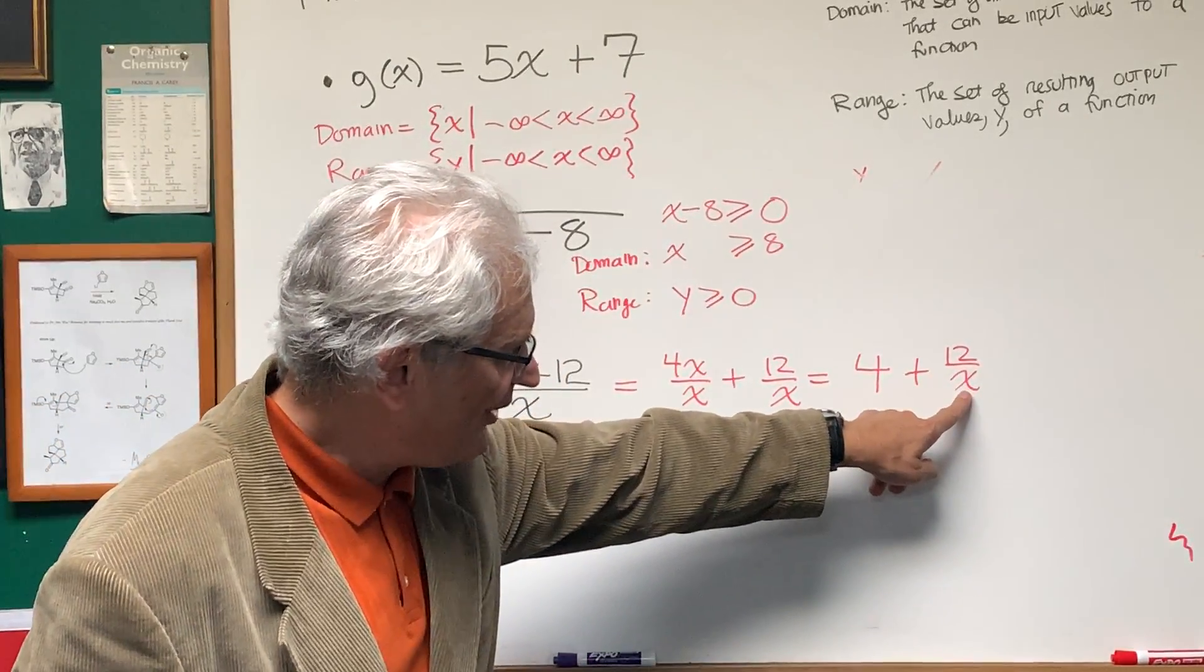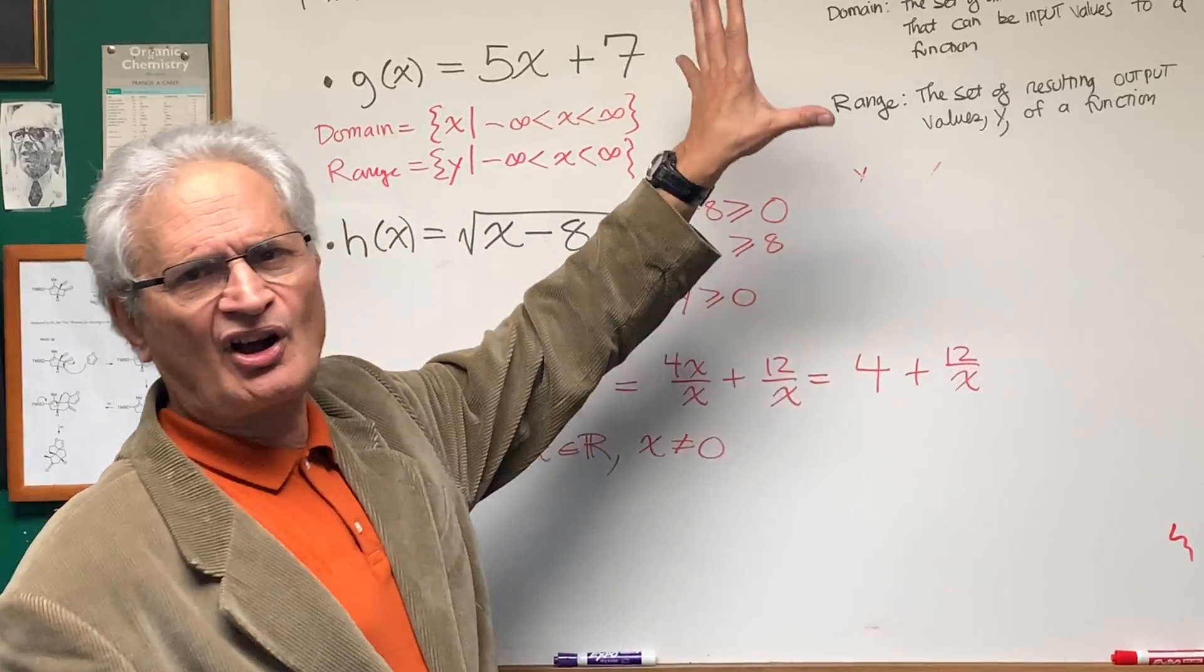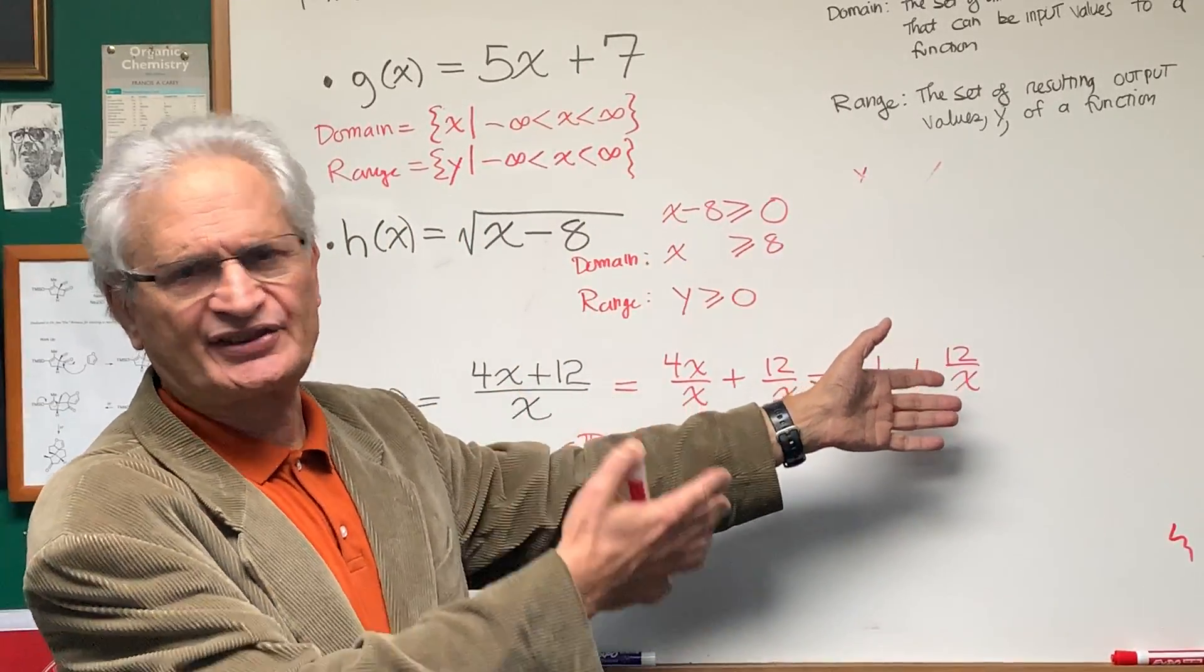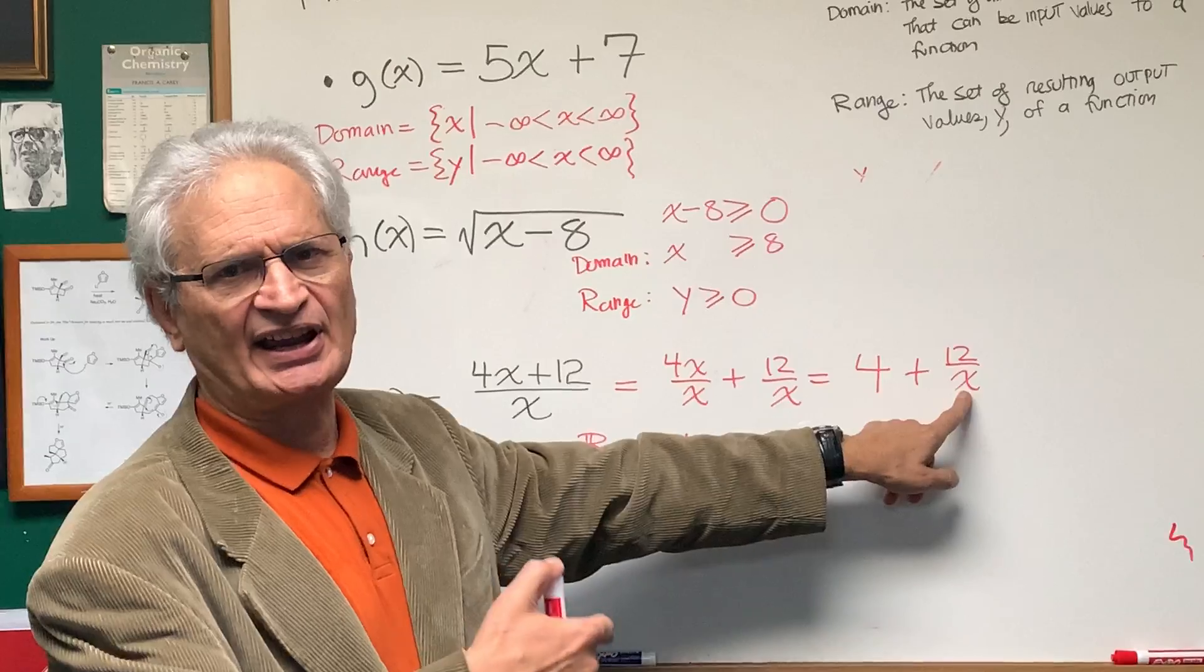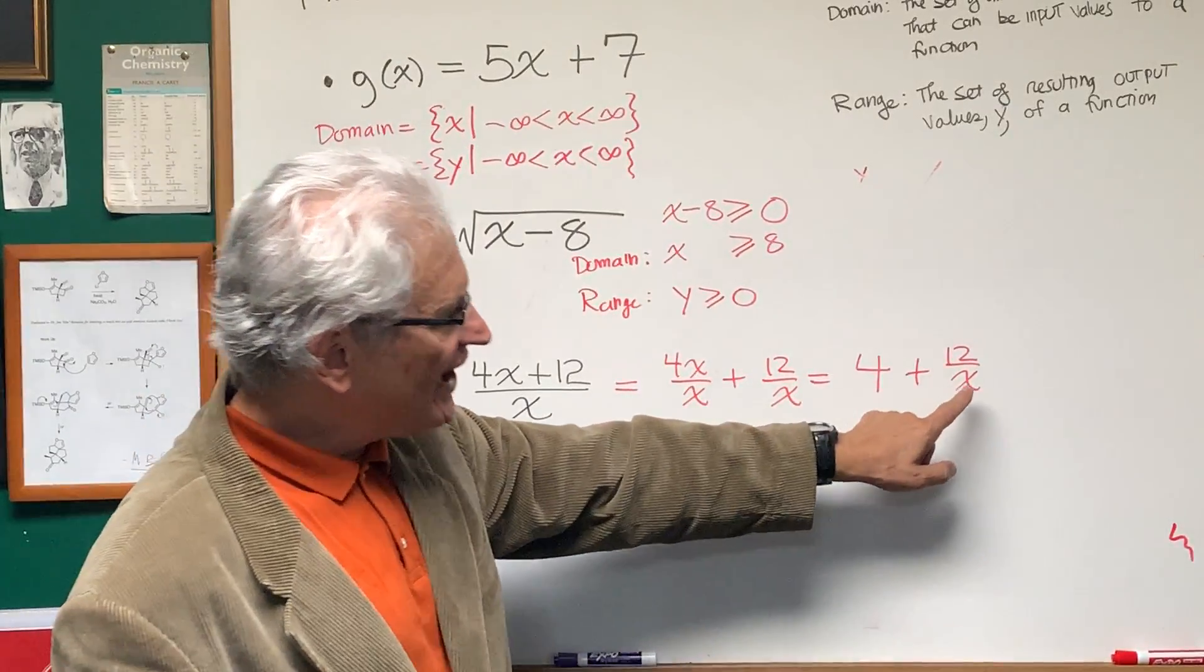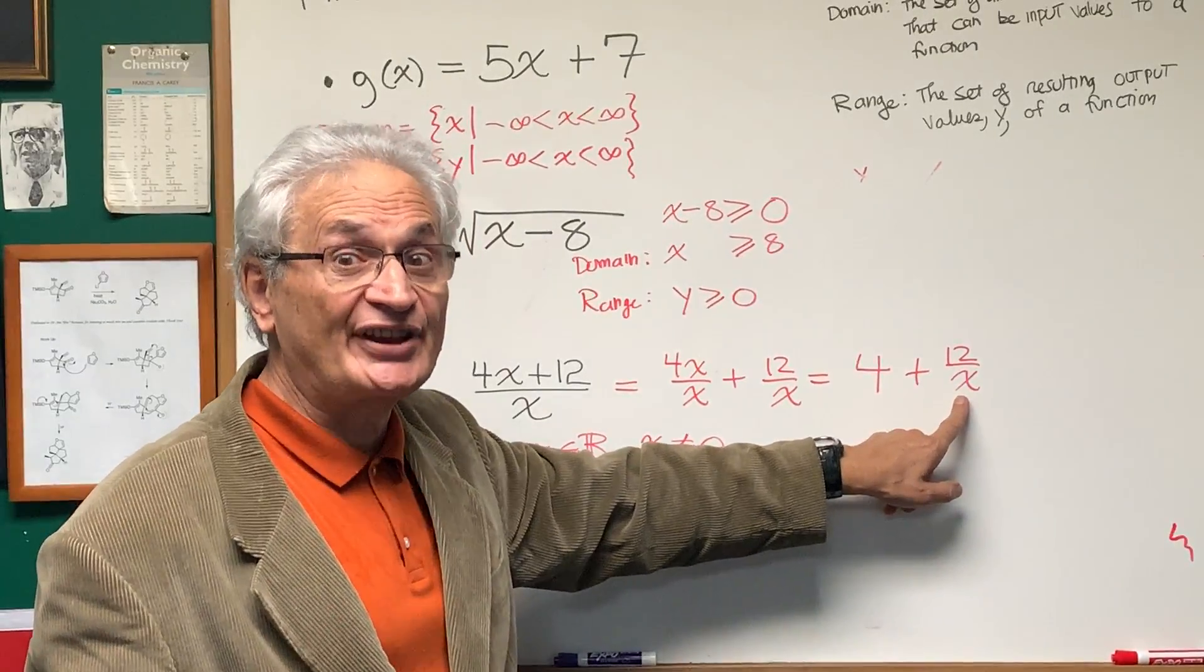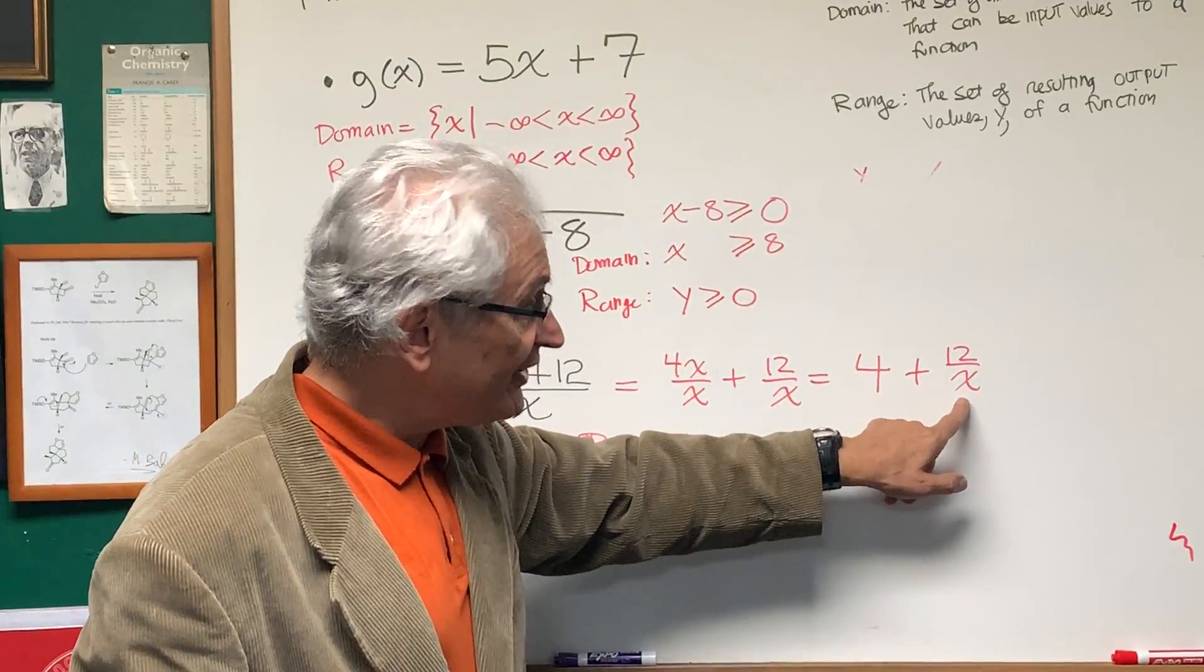Now x can't be 0, we know that. But as x approaches 0, what happens? This gets larger and larger, or in the case of x going to 0 from the negative side, it's going to have larger and larger negative numbers. As x, what we're going to be looking at here is as x goes to infinity.